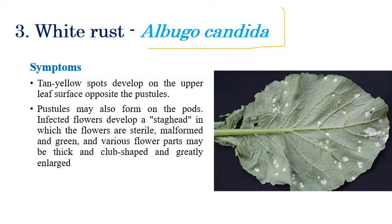Coming to white rust, caused by Albugo candida. Symptoms are mostly seen on leaves. White color growth can be seen on the lower surface of leaves, while on the upper surface, yellow color spots can be seen. On the lower surface, white color powdery growth or dropping-like symptoms can be seen. On the upper surface, yellow color pustules are visible, exactly on the opposite side.